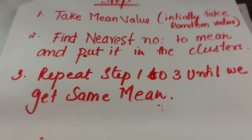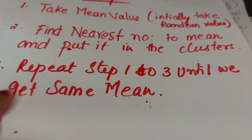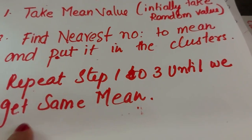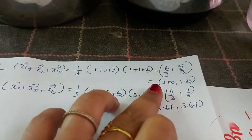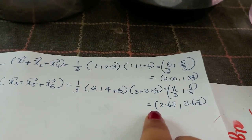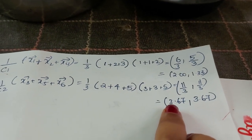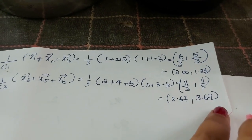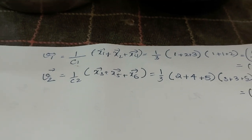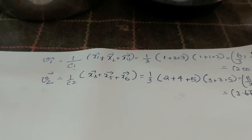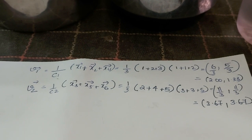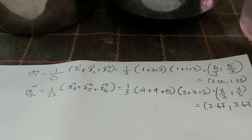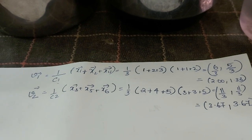Can we stop here? No, we can't stop yet. We have to repeat steps 1 to 3 until we get the same mean. So we need to draw the table again with the updated centers and check for convergence.